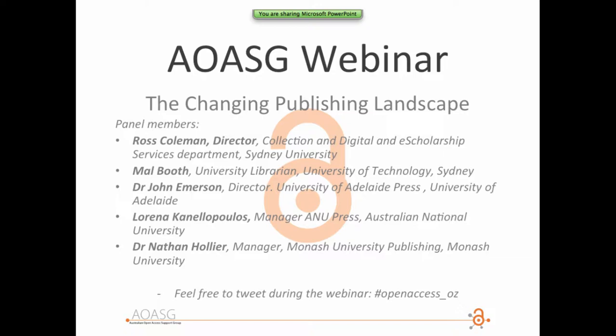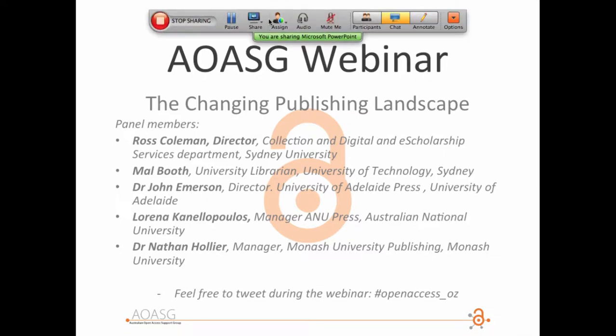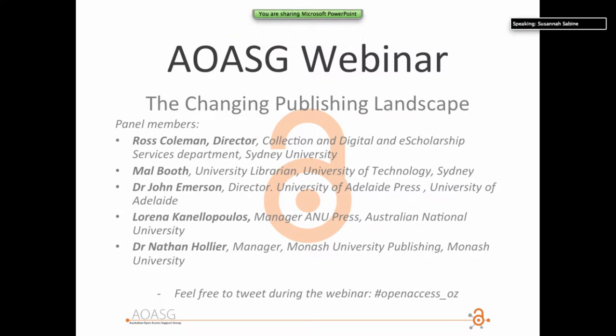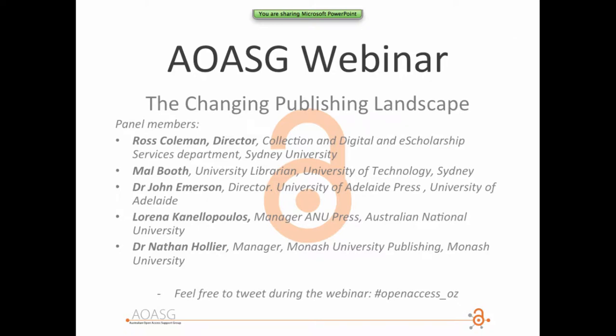The way we work is we have an open access free edition, which is a PDF — occasionally I've experimented with other formats but PDF is still our primary one — and we also have a complimentary print edition. We run the University Press searches, go out looking for manuscripts, vet them, send them to peer review, run the editorial process, then the design process and publication. So far we've done 40 books. The University of Adelaide itself hasn't got a formal open access policy.